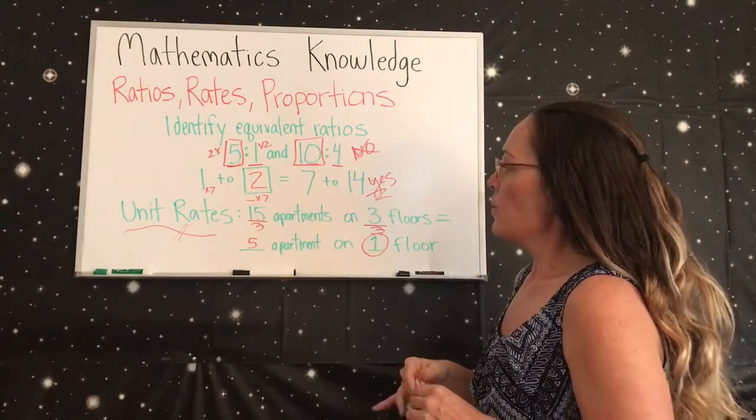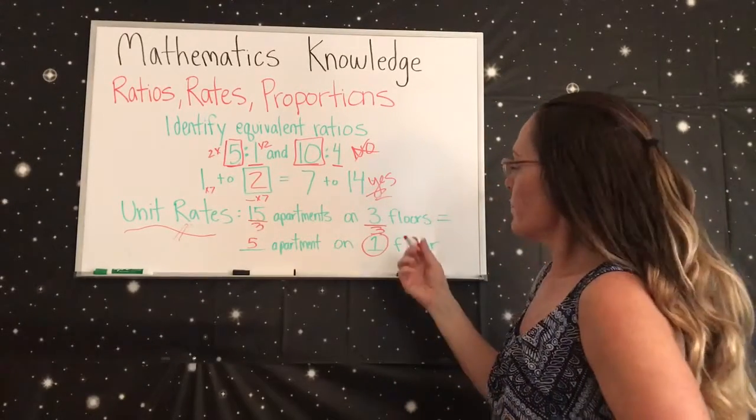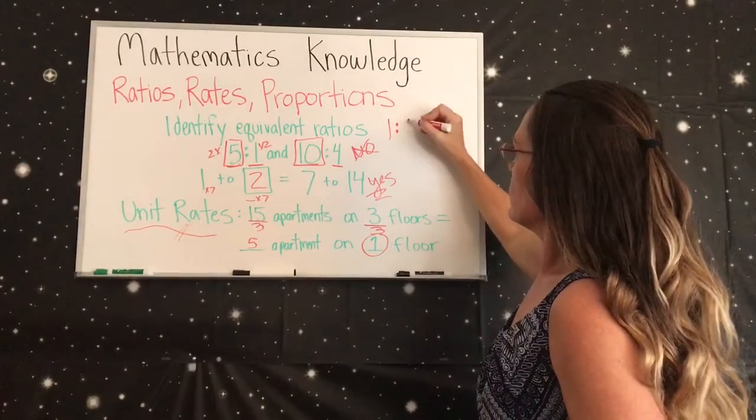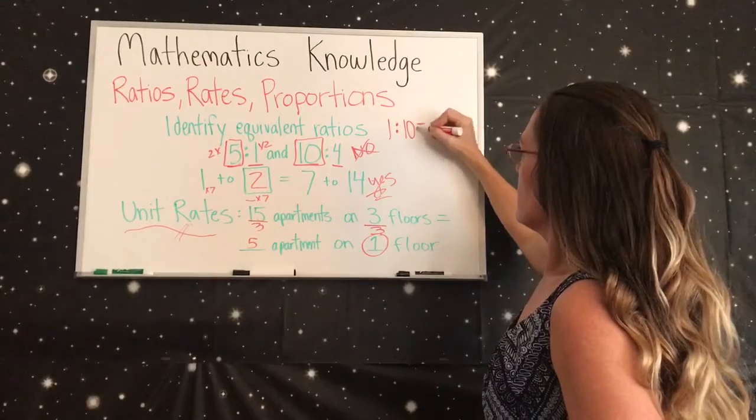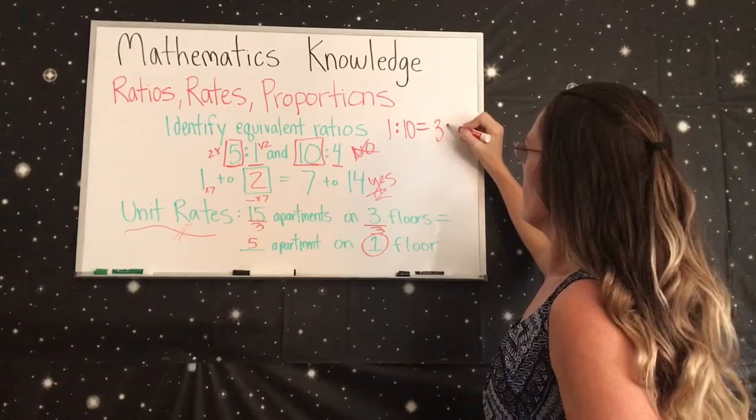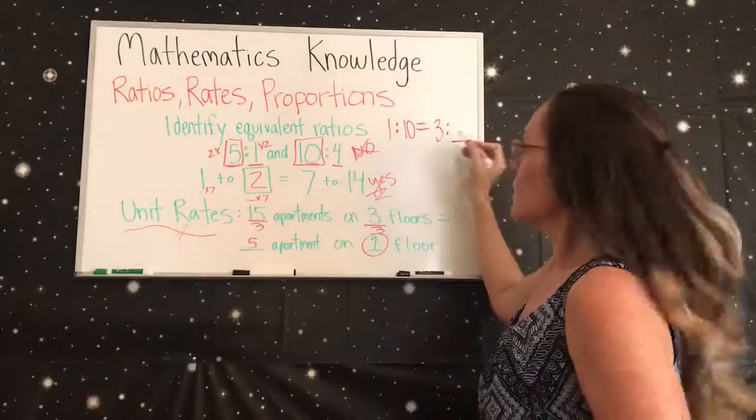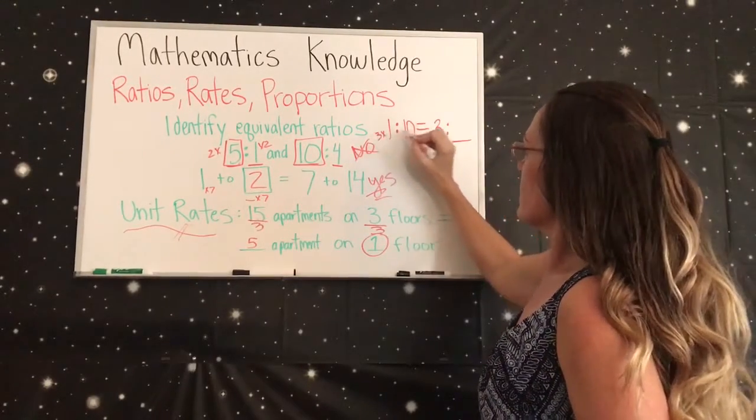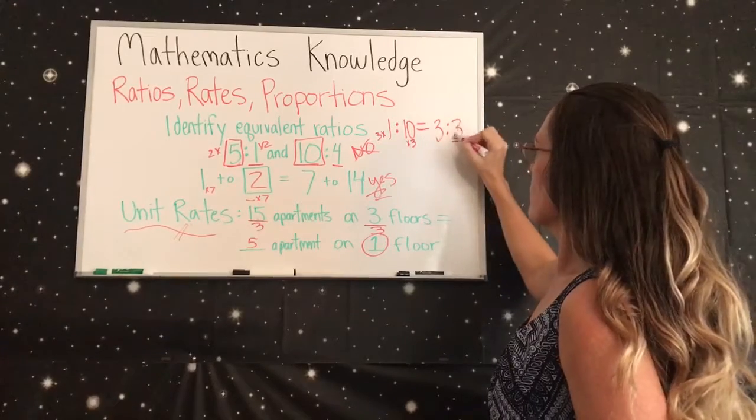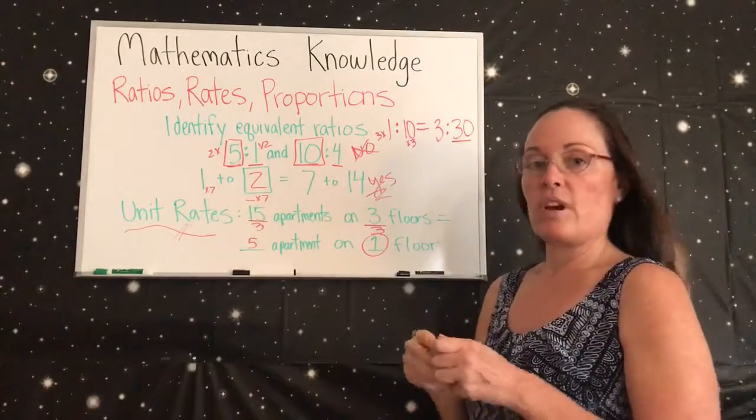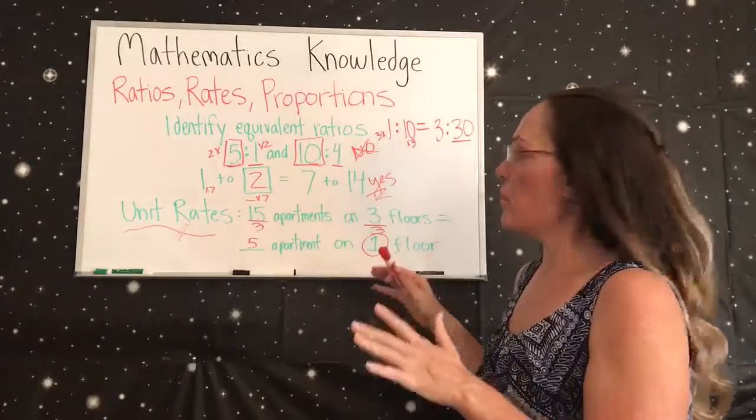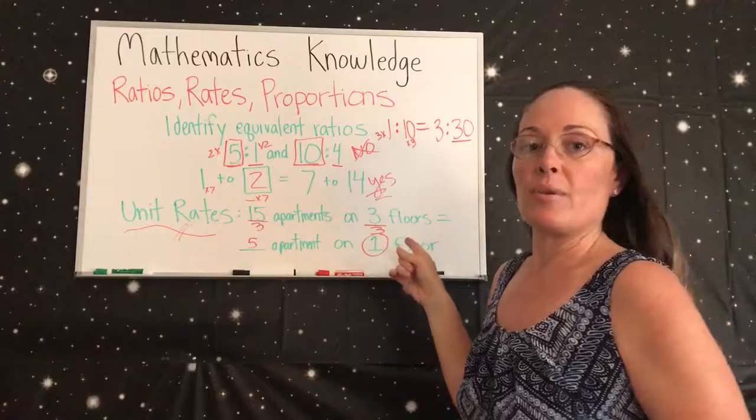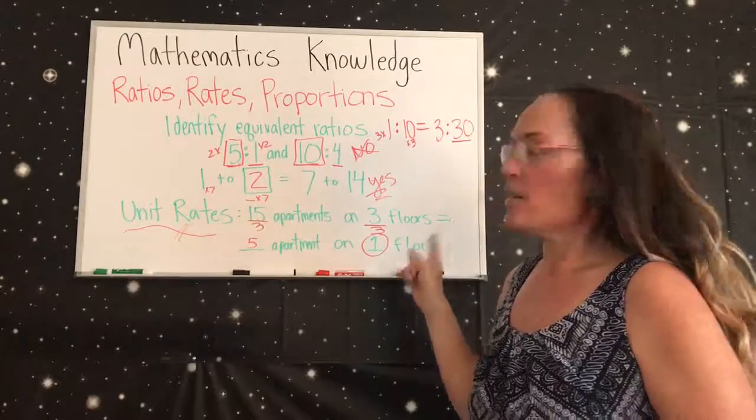And then we could do more examples. Like, you can even make one up. If you have 1 to 10 equals 3 to some number for the equivalent ratios, just do 1 times 3 to get the 3, so 10 times 3, so this would be 30. So everything either balances out, so you're going to multiply or divide by the same number to get the answers. And I would rewind and watch it again to really get this one.